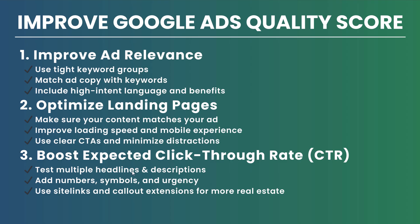Test multiple headlines and descriptions with responsive search ads — you get 15 headlines and four description lines. Use numbers, symbols, and urgency like '24 hours' or 'number one.' Things like a free inspection can incentivize people to click, helping increase your click-through rate.